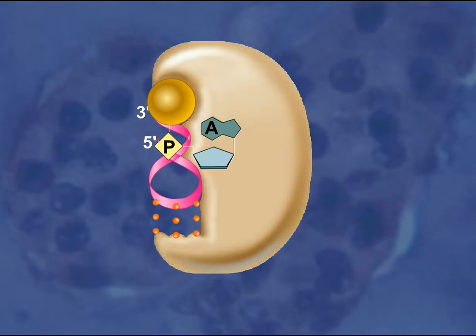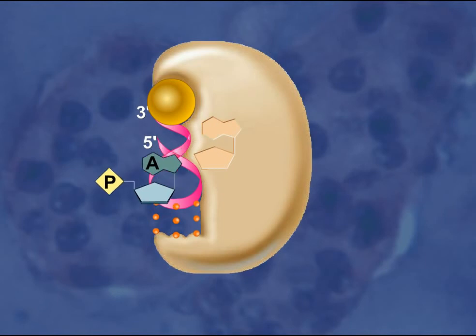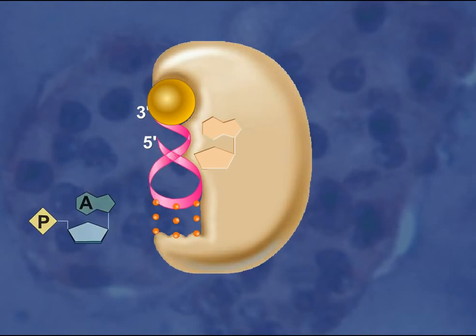The AMP is released. At the same time, a covalent bond is formed between the amino acid and the 3' end of the tRNA.